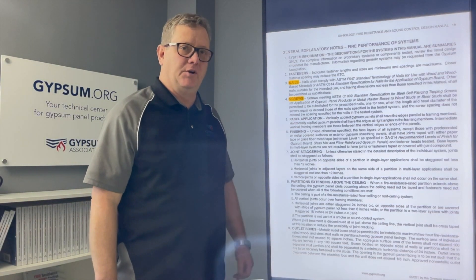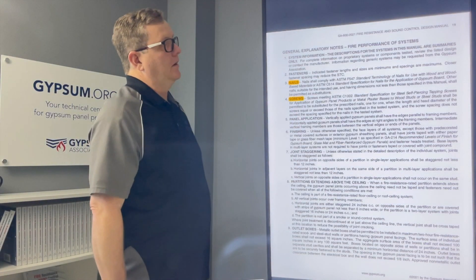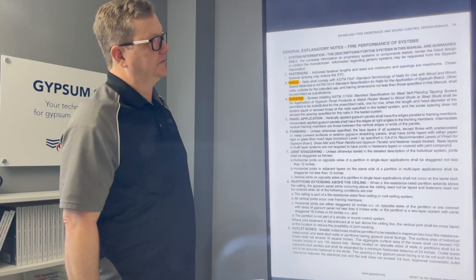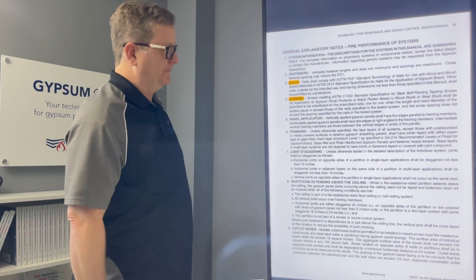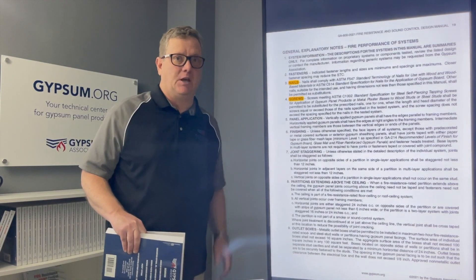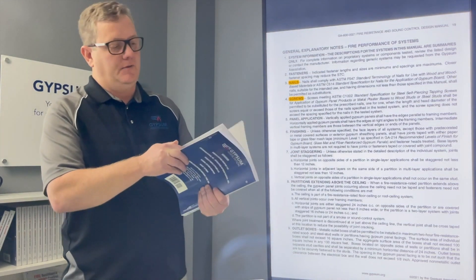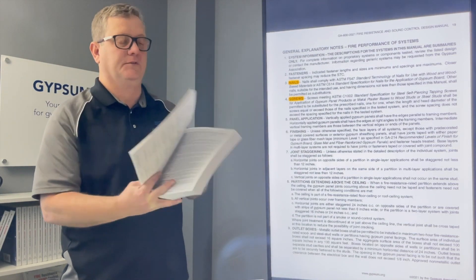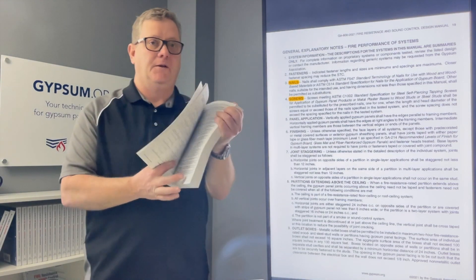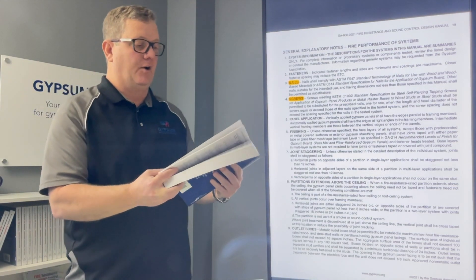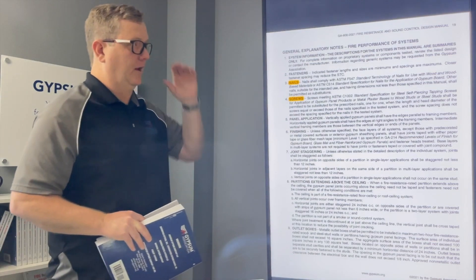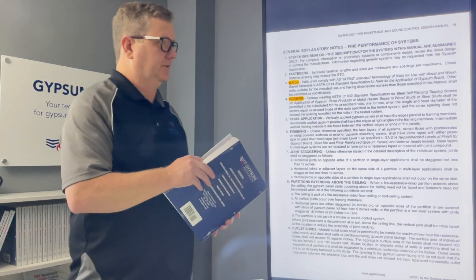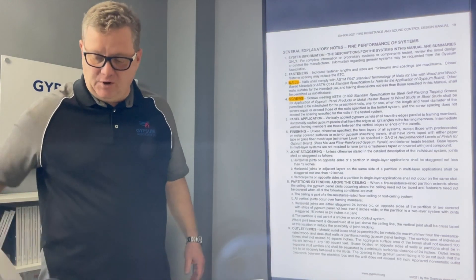You're watching GA 600 Explained. In this episode we're going to discuss general explanatory notes for fire performance of systems on page 19. There's a second section within the GA 600 2021 edition that deals with general explanatory notes for acoustical performance of systems, located on page 33 in the front matter of the GA 600. The front matter is basically the first 40 pages of the GA 600.